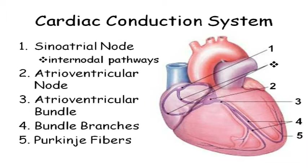The five parts are: the SA node (sino-atrial node), the AV node, the AV bundle, the bundle branches, and the Purkinje fibers. These are not the contractile cells.